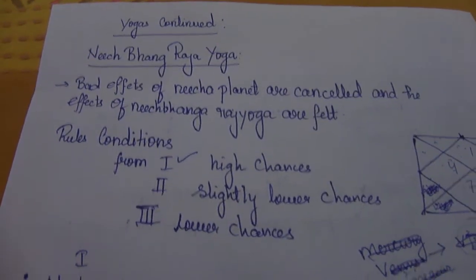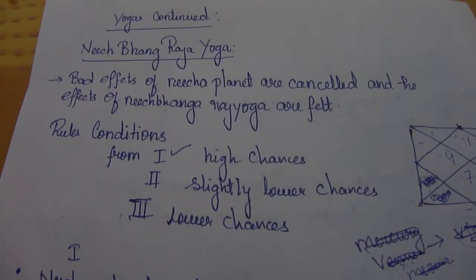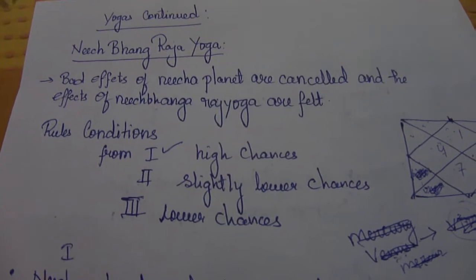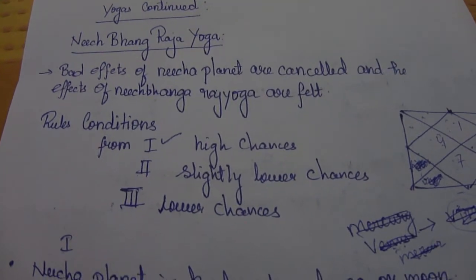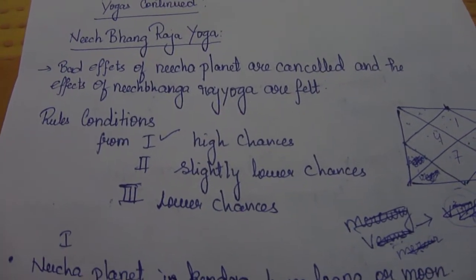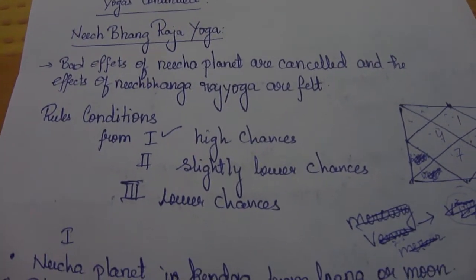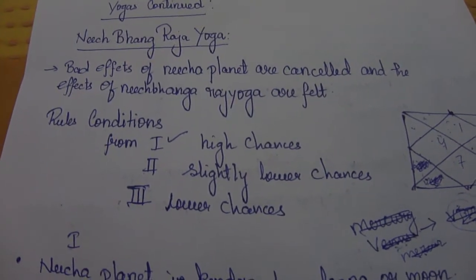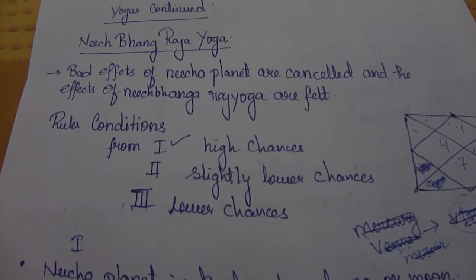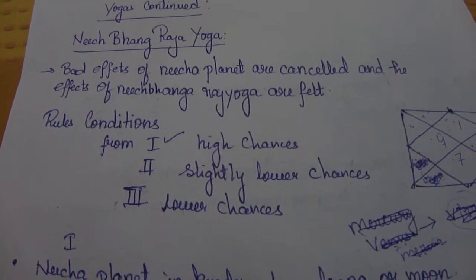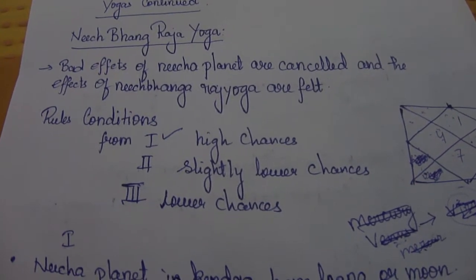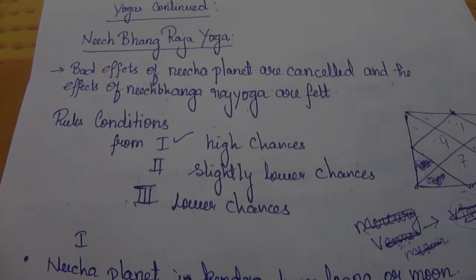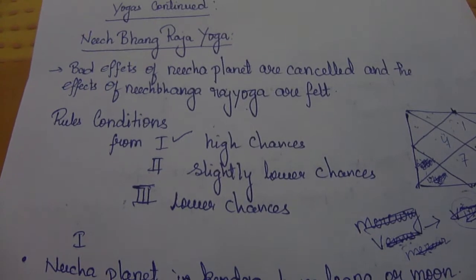Good morning everyone. In this video we will continue our discussion with the different yogas and we'll start with the Neecha Bhanga Raja Yoga. Now what is Neecha Bhanga Raja Yoga? It means that the Neecha or the debilitated planet starts giving good results — the bad effects of the debilitated planet are cancelled and the effects of the Neecha Bhanga Raja Yoga are felt.